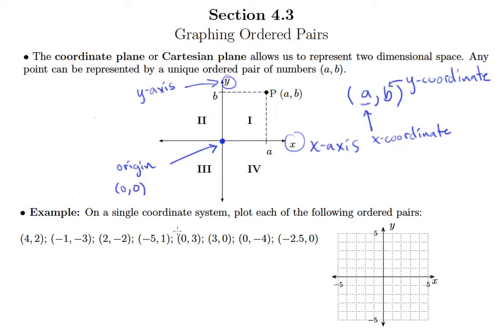To locate a point (A, B), we start at the origin and go over a distance of A along the x-axis. Then from there we go straight up a distance of B in the y-direction, and that will be the location of the point (A, B).